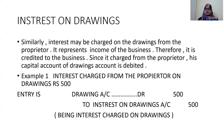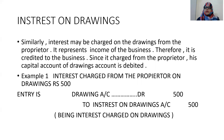Similarly, we have interest on drawings. Interest may be charged on drawings from the proprietor — it represents income to the business. Since it is charged to the proprietor, his drawings account is debited. Drawings relate to the personal expenditure of the proprietor. Example: interest charged from proprietor on drawings Rs. 500. Journal entry: drawings account Dr. Rs. 500, to interest on drawings account Rs. 500. Narration: being interest charged on drawings.